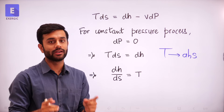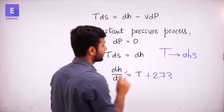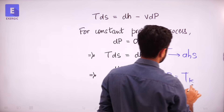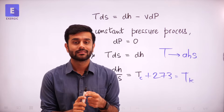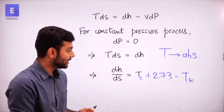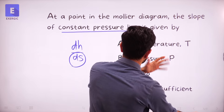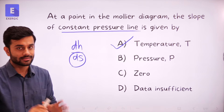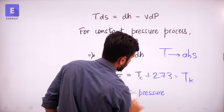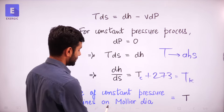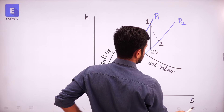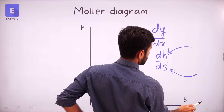The slope of the constant pressure line is not negative — it is going to be a positive slope. And the answer to the question is A: temperature — specifically absolute temperature in Kelvin. So the slope of a constant pressure line on a Mollier diagram equals T, the temperature in Kelvin.